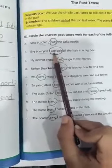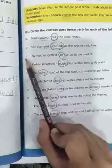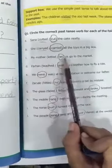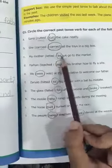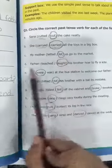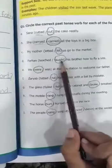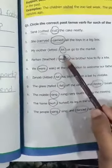Option C: 'My mother let it/letted/let us go to the market.' 'Let it' is not any word, so you will circle 'let.' The second form of 'let' is also 'let.' Option D: 'Farhan teached/taught his brother how to fly a kite.' The second form of 'teach' is 'taught,' so you will circle 'taught.'